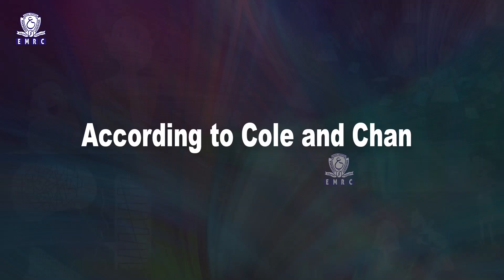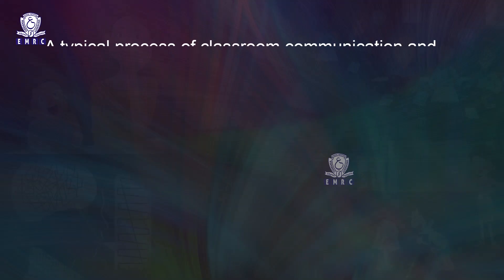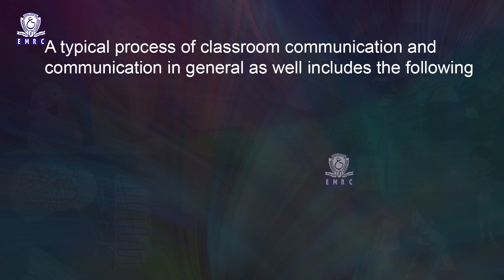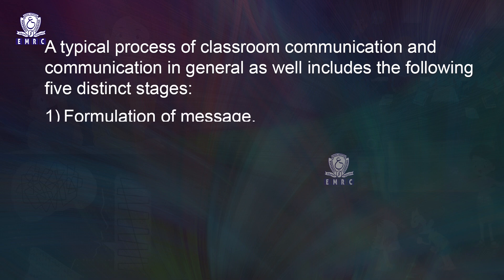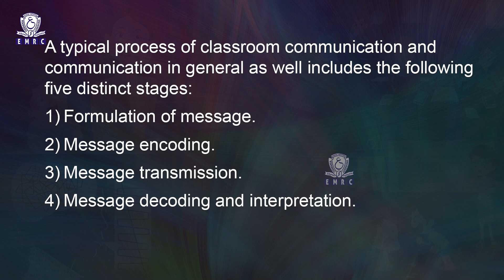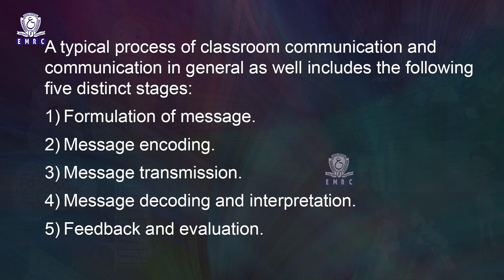According to Cole and Champ, a typical process of classroom communication includes five distinct stages: one, formulation of messages; two, message encoding; three, message transmission; four, message decoding and interpretation; five, feedback and evaluation.